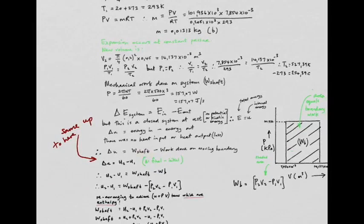Change in internal energy is work by shaft minus work on moving boundary. It can also be written as U₂ - U₁. Rewriting: U₂ - U₁ = work by shaft - (P₂V₂ - P₁V₁). Now we rearrange to achieve U + PV terms, because those represent enthalpy.